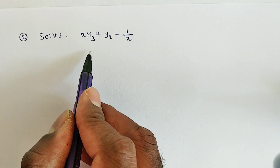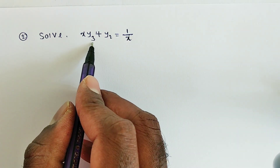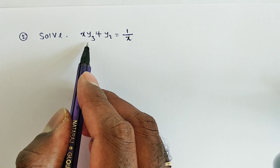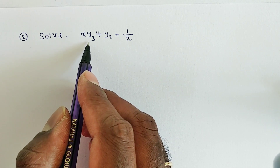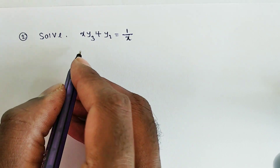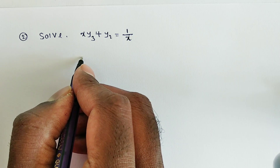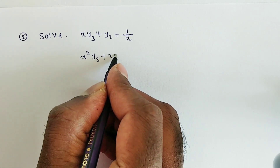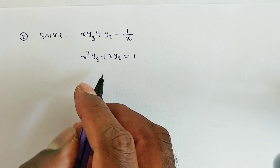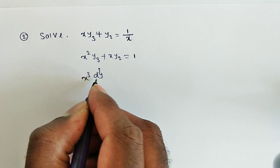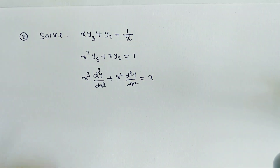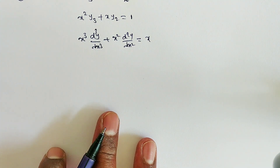Next problem: Solve x·y₃ + y₂ = 1/x, where y₃ denotes the third derivative and y₂ the second derivative. In a Cauchy-Euler equation, the power of x should match the order of the derivative. Here it doesn't, so we rearrange. Multiplying through by x gives x²y₃ + xy₂ = 1. Multiplying by x again gives x³ · d³y/dx³ + x² · d²y/dx² = x. This is now a homogeneous linear (Cauchy-Euler) equation.